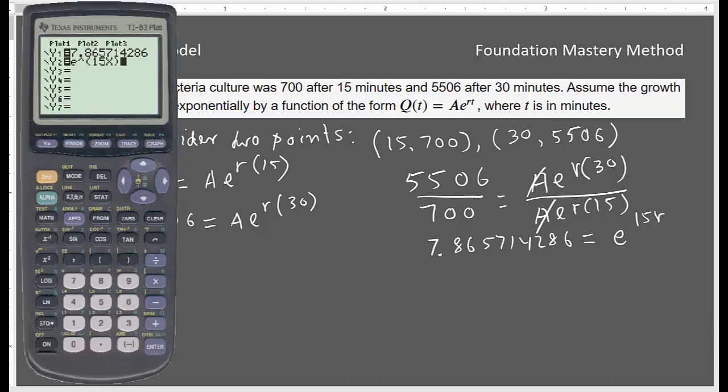So I'm just typing one side. This is my y which is 7.865714286 and another one is e^(15r). I replace r by x in my calculator. So e^(15x), and you know how it is 15r - this exponential rule. We have e^(30r) and you divide it by e^(15r), so you just subtract the exponents. 30r minus 15r gives you here.